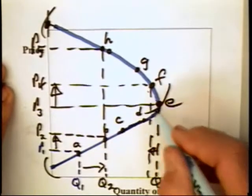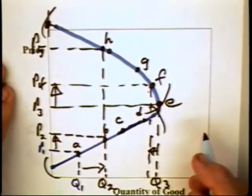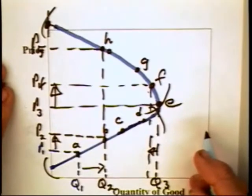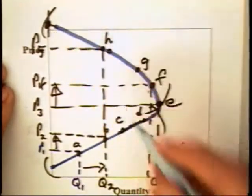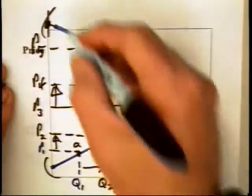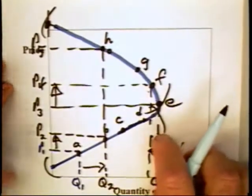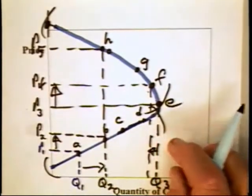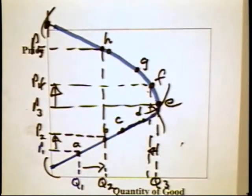It doesn't matter if there are some goods out there with upward sloping portions of the demand curve. There's going to be a downward sloping portion and that's going to be the relevant range where firms are going to be making their decisions.